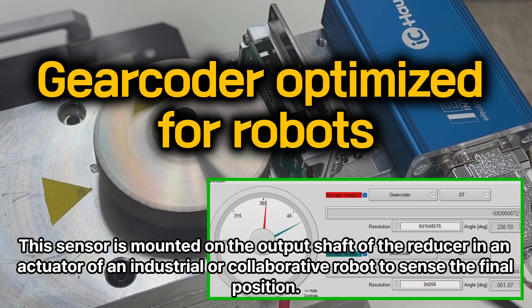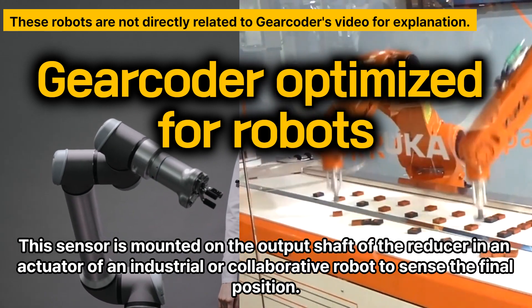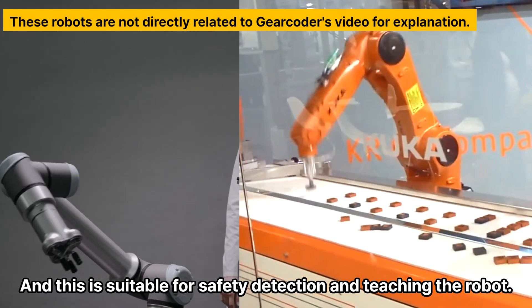This sensor is mounted on the output shaft of the reducer in an actuator of an industrial or collaborative robot to sense the final position. And this is suitable for safety detection and teaching the robot.